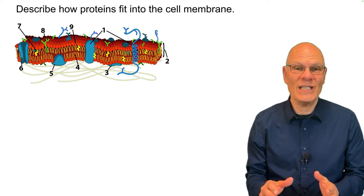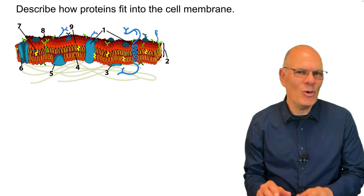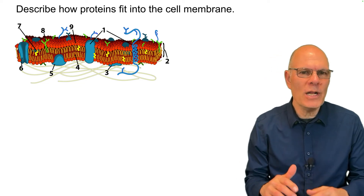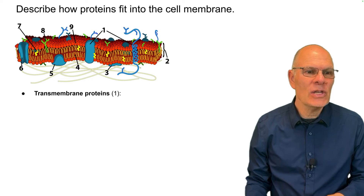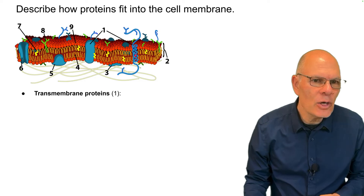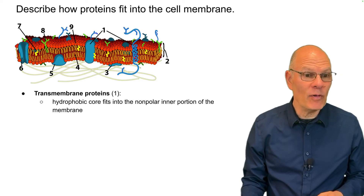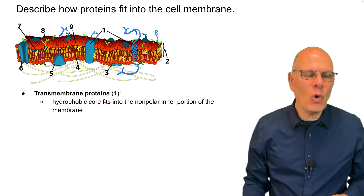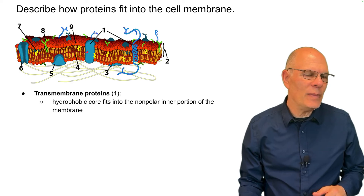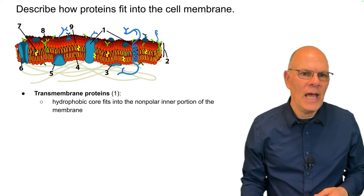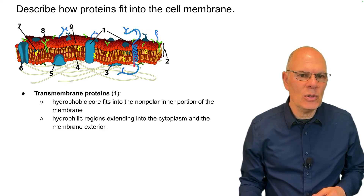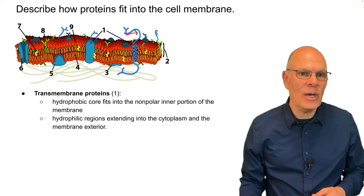Describe how proteins fit into the cell membrane. There are three ways that proteins can fit in. If you think about hydrophobic and hydrophilic — what binds with what — it makes a lot of sense. There are transmembrane proteins, shown here: notice the alpha helix with a hydrophobic core that fits into the nonpolar inner portion of the membrane. These would be hydrophobic amino acids in the middle, with hydrophilic regions that extend into the cytoplasm and the membrane exterior.